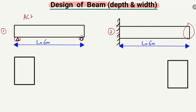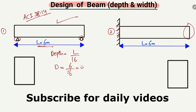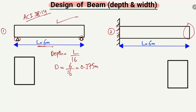ACI — American Concrete Institute 318-14 — states that for a simply supported beam, you can find the minimum depth of the beam equal to L divided by 16, where L is the length of the beam. Here L is 6 meters, so the minimum depth equals 6 divided by 16.